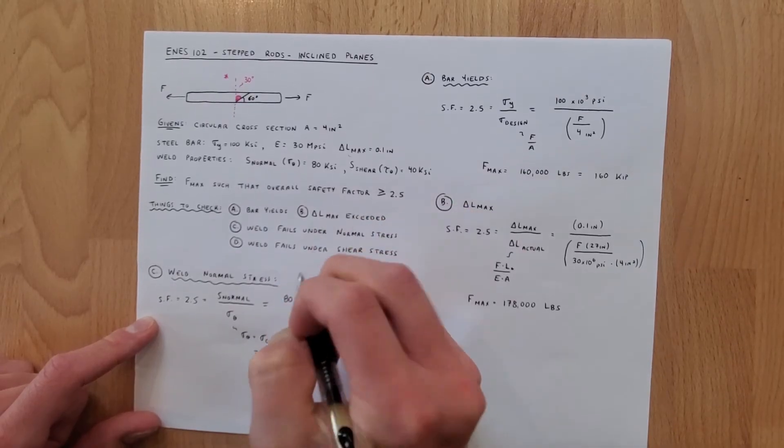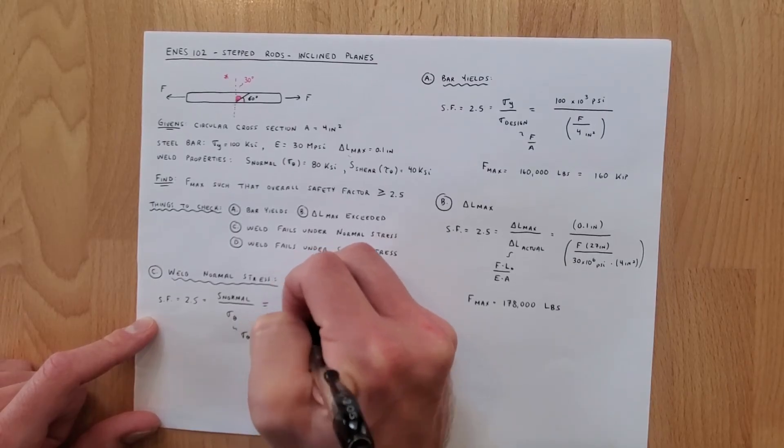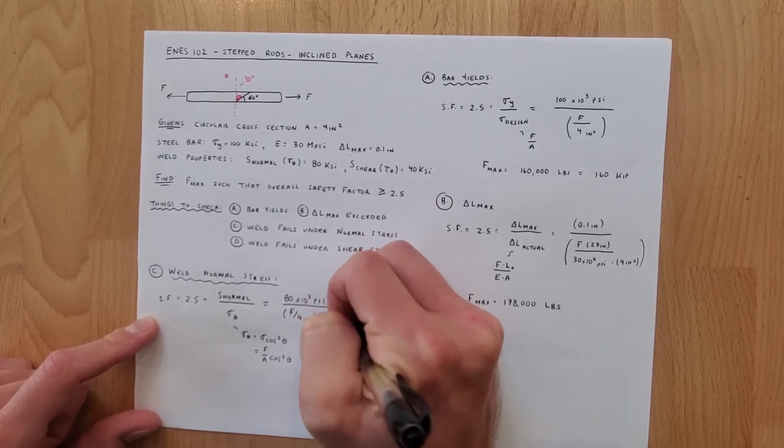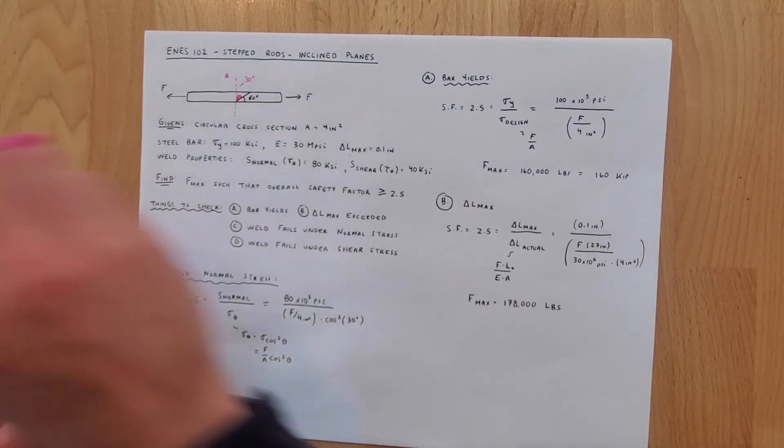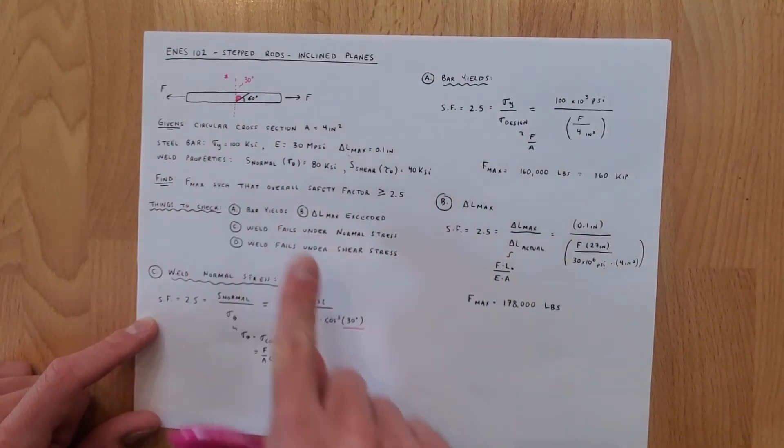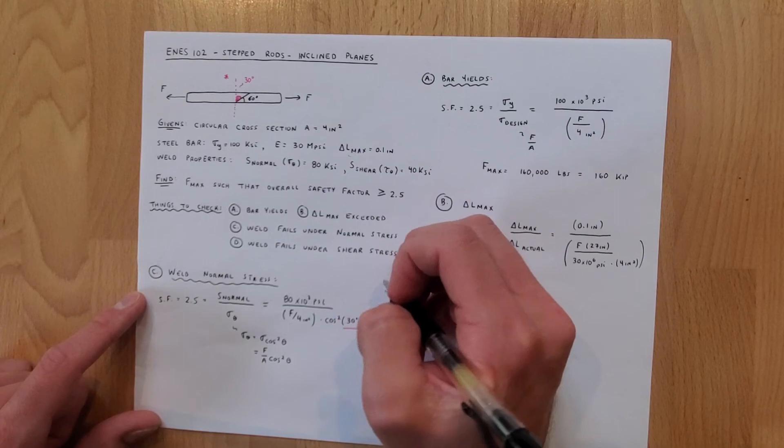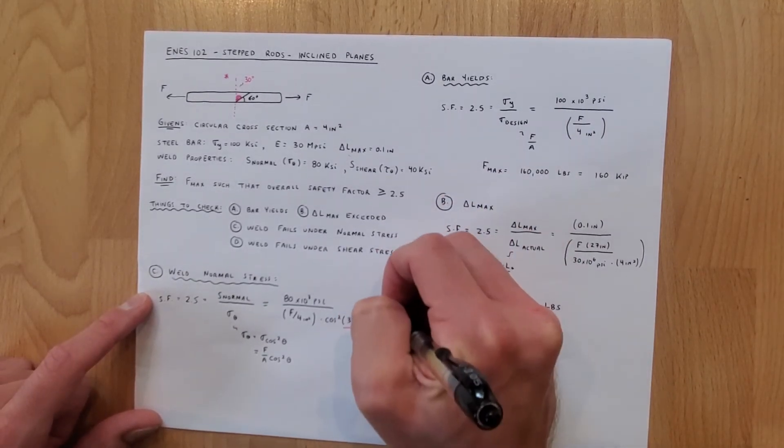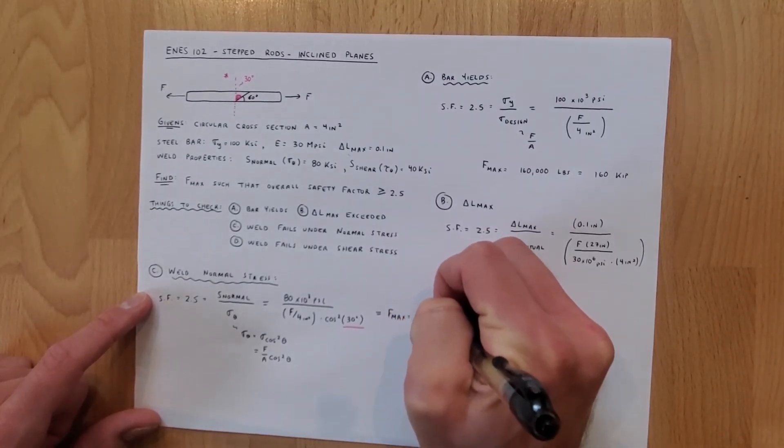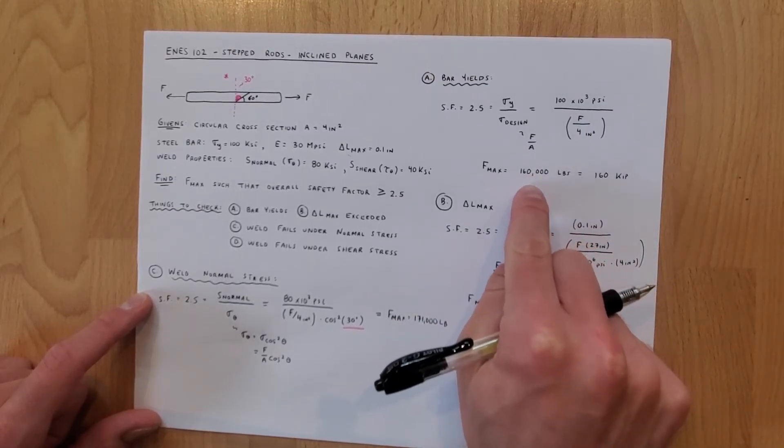So we plug in all of our numbers we get 80 times 10 to the third psi divided by our f over a which is f over four inches squared times the cosine squared of 30 degrees. And remember that this 30 degrees was what I pointed out to you earlier. This was a way that the person who wrote this problem was trying to trick you but fortunately we're smarter than they are. So now when we get out all this, this tells us that f max here is equal to 171,000 pounds.